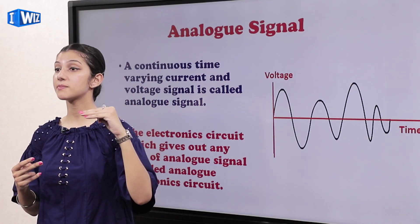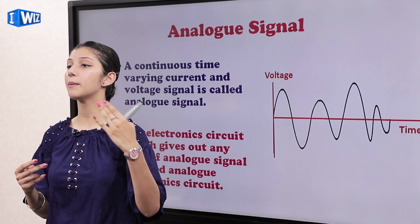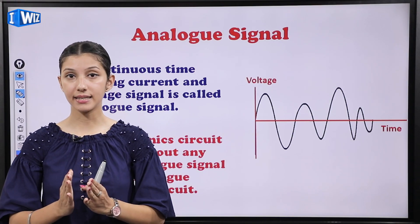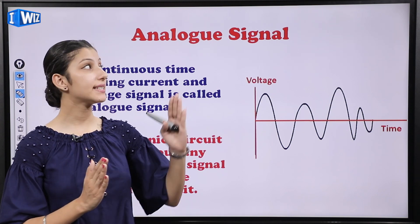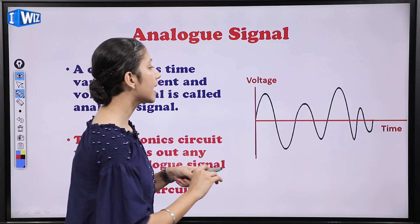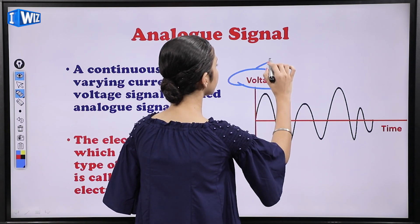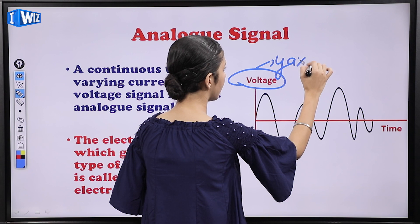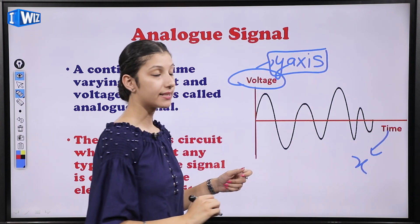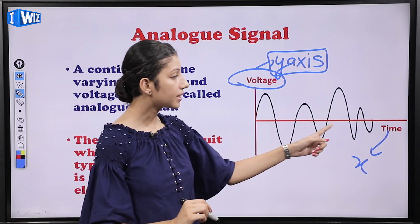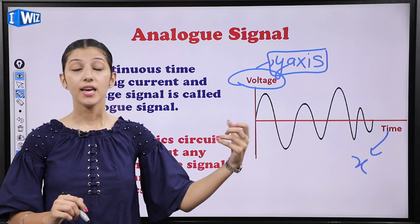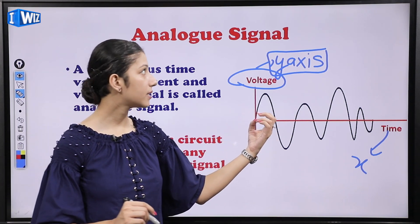Analog signal basically woh hota hai jis mein jo voltage hai ya current hai ya power hai — woh time ke saath vary karta hai. That type of signal is known as analog signal. Voltage is plotted on the y-axis and time on the x-axis. As time increases, the voltage varies — it is not constant. So these type of signals are known as analog signals.